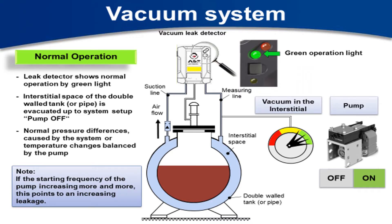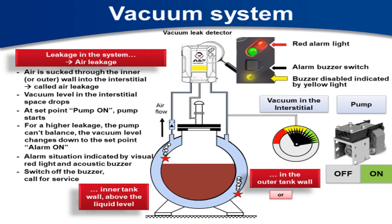In normal operation you look for the green light. You have airflow, a measuring line, and the interstitial space — it's being monitored 24/7. There's a gauge showing the vacuum is in place and a pump keeping it under pressure all the time. The same concept is used for the pressure system except it's pushing instead of pulling — basically the same thing. If there's a leak in a vacuum system above the liquid line, the system will be pulling air and will notice the change in vacuum and go into alarm. The same applies to the outer tank — if it has a leak and there's no groundwater around it, it's pulling air and that will go into alarm too.